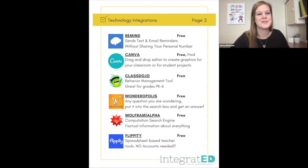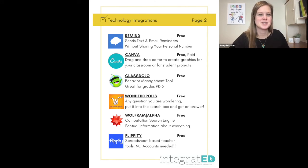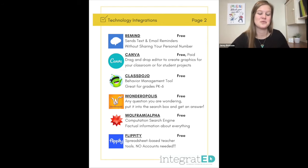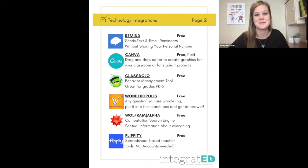Number twelve is Flippity. This is spreadsheet-based teacher tools. From randomizers to spelling word lists to creating quick word searches, you can use Flippity to create custom activities for your students and no account is needed. Just put in the information you need — a crossword puzzle or a randomizer — and it will create it for you.